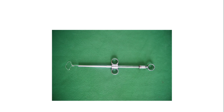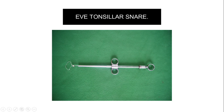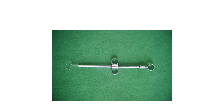This is the Eve's tonsillar snare. The function of this wire loop is that we dissect the tonsil completely — we pass the wire loop around the tonsil, push it down, and cut. The tonsil is then severed.